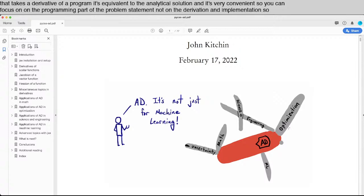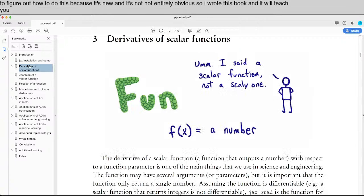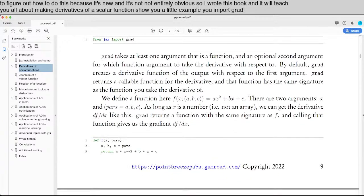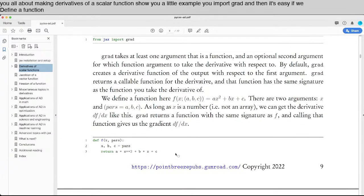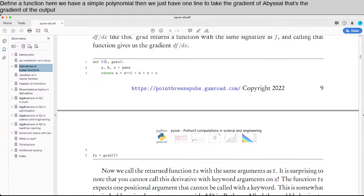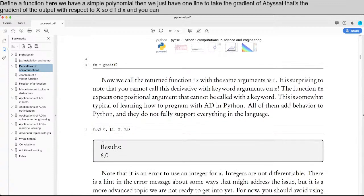So it takes a while to figure out how to do this, because it's new, and it's not entirely obvious. So I wrote this book, and it will teach you all about making derivatives of a scalar function. I'll show you a little example. You import grad, and then it's easy. If we define a function, here we have a simple polynomial, then we just have one line to take the gradient of f. So that's the gradient of the output with respect to x, so df/dx. And you can evaluate it, and it works like a function, as you might expect.